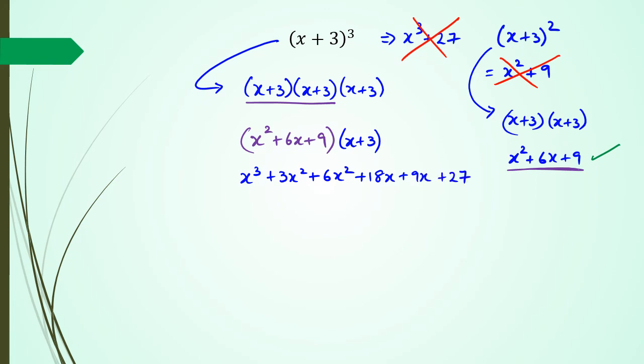So simplifying this, I would have x cubed. 3x squared and 6x squared is 9x squared. 18x and 9x is 27x. And plus 27 as the final part.